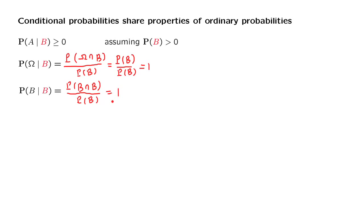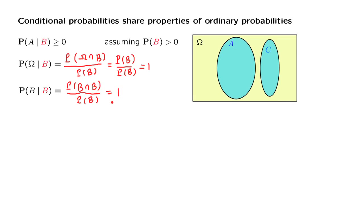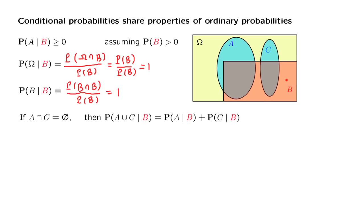Finally, we need to check the additivity axiom. The additivity axiom says: if we have two events — two subsets of the sample space that are disjoint — then the probability of their union is equal to the sum of their individual probabilities. Is this going to be the case if we condition on a certain event? What we want to prove is that if two events A and C are disjoint, then the conditional probability of their union given B equals the sum of their individual conditional probabilities given B.